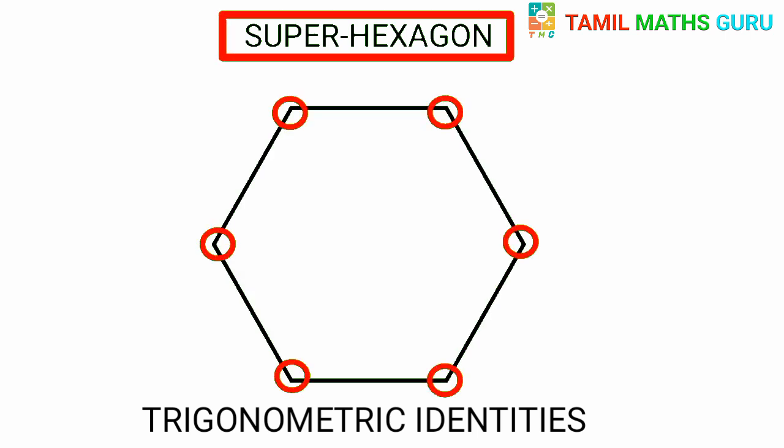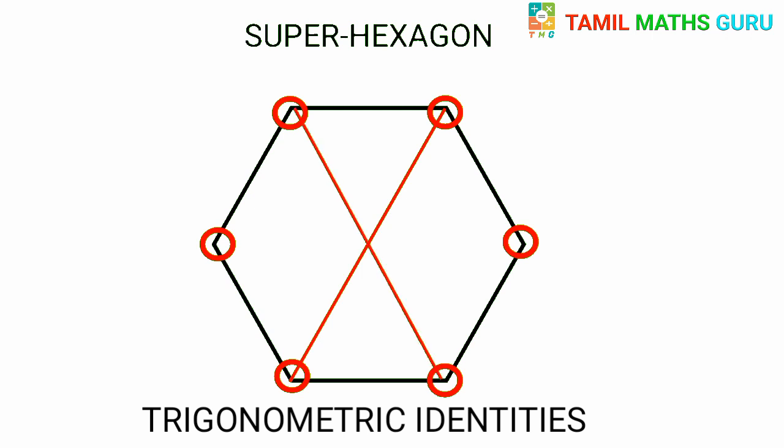The hexagon has six vertices and three diagonals.